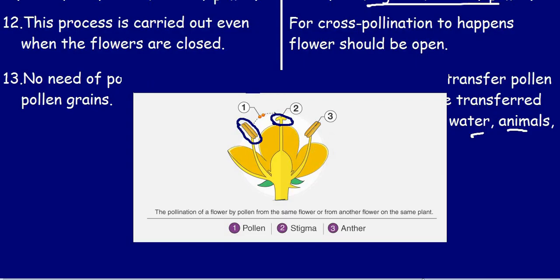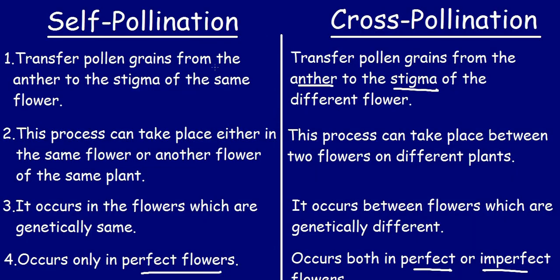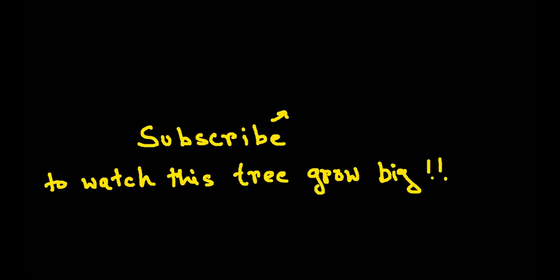For cross-pollination, the pollen grain moves from the anther of one flower to the stigma of another flower. The pollen grains are transferred from the anther of flower one to the stigma of flower two. These were the differences between self-pollination and cross-pollination.